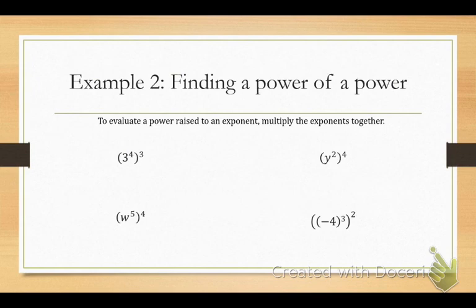In my second example, this is what we call power of powers. Raising the power, finding the power of a power. So to evaluate a power that is raised to an exponent, I would multiply the exponents together. Please notice, within the parentheses, I have a base being raised to an exponent. Then that exponent is being raised to another power. When that happens, I can multiply my exponents together. So what is four times three? Three to the twelfth power. So you will have to recognize when do you add your exponents and when do you multiply them?